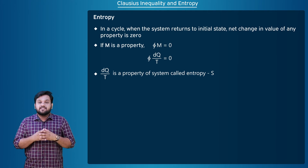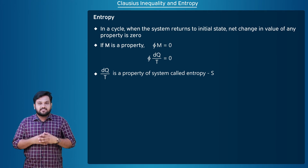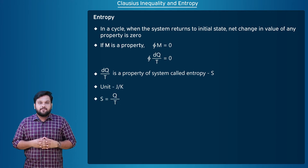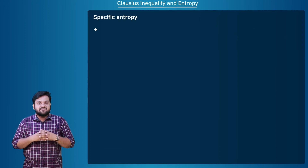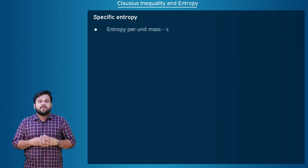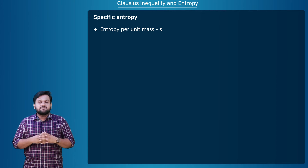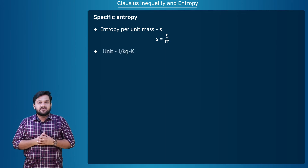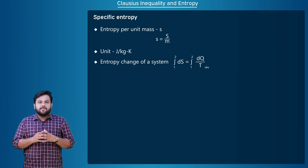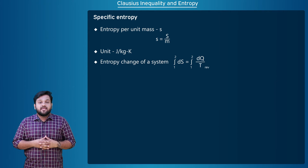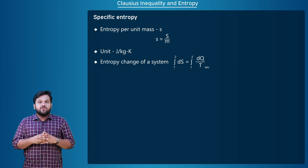Clausius named this property entropy, denoted by S, with units of joules per kelvin. S = Q/T. Entropy is an extensive property of the system. Specific entropy is the entropy per unit mass, denoted by lowercase s, where s = S/m, with units of joules per kilogram kelvin. The entropy change of a system during a process can be found by the formula: integral from 1 to 2 of dS equals the integral from 1 to 2 of dQ/T along a reversible path.